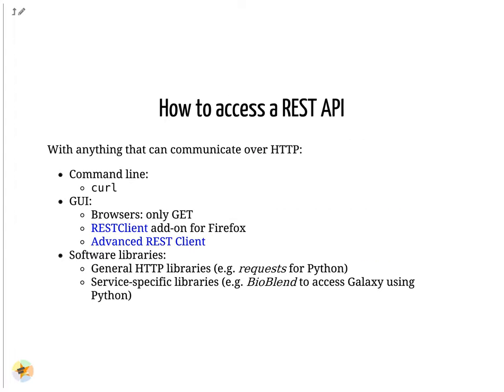A REST API can be accessed via the HTTP protocol. There are three main ways to do that. On the command line, the curl tool can perform any type of HTTP requests. For graphical user interfaces, you can perform GET requests directly on your browser by simply entering the URI on the address bar. For more complex requests, you can use the advanced REST client open-source app. The third and most common way is to write a program. All programming languages have some general library to communicate over HTTP. For Python, requests is probably the best library. Many web services provide dedicated higher-level libraries to access their REST API. In particular, BioBlend is a Python library to interact with Galaxy that we will describe later.